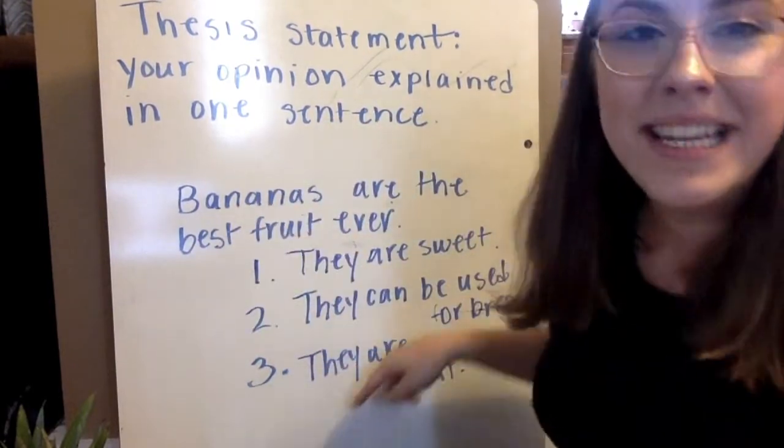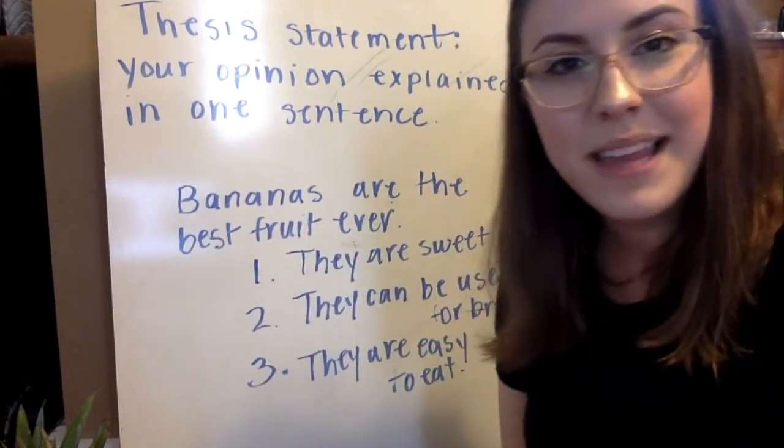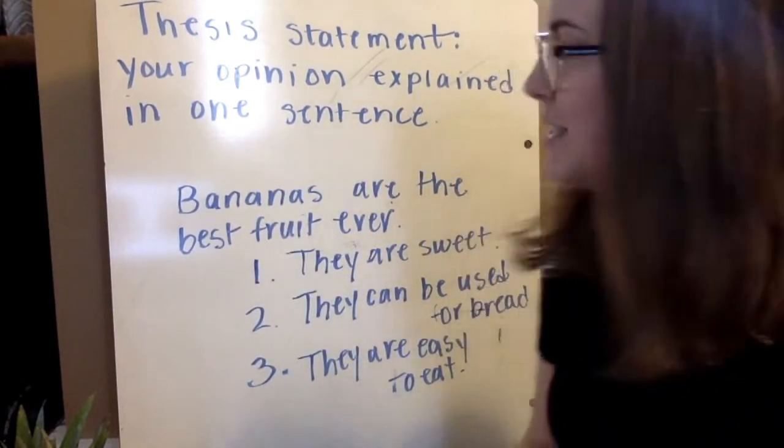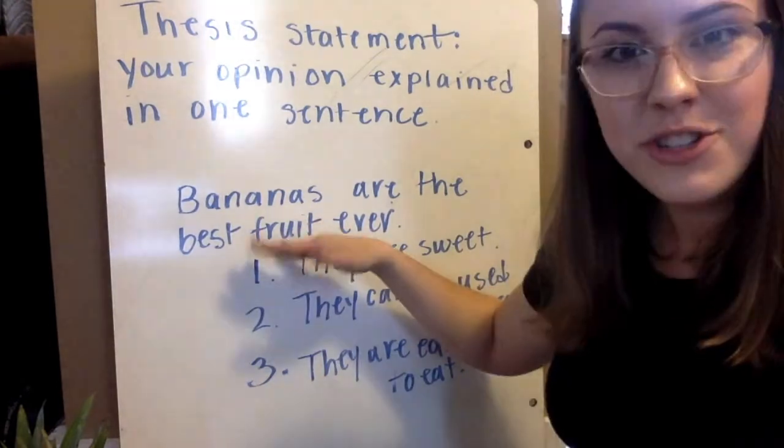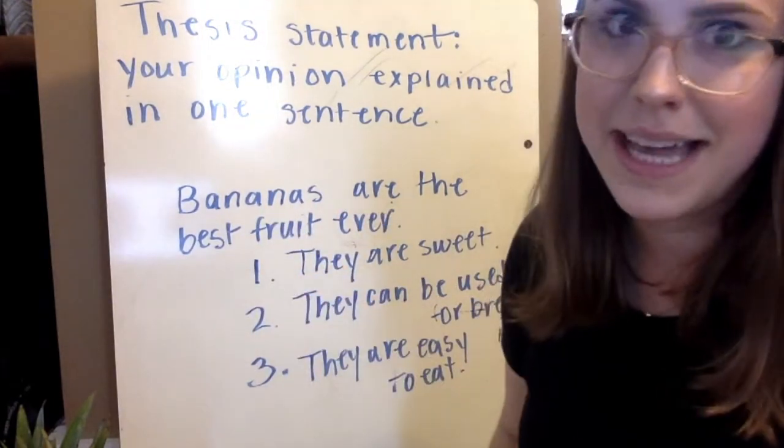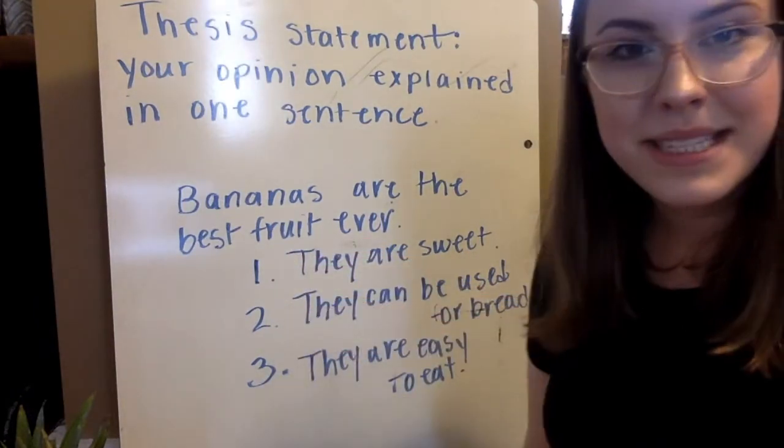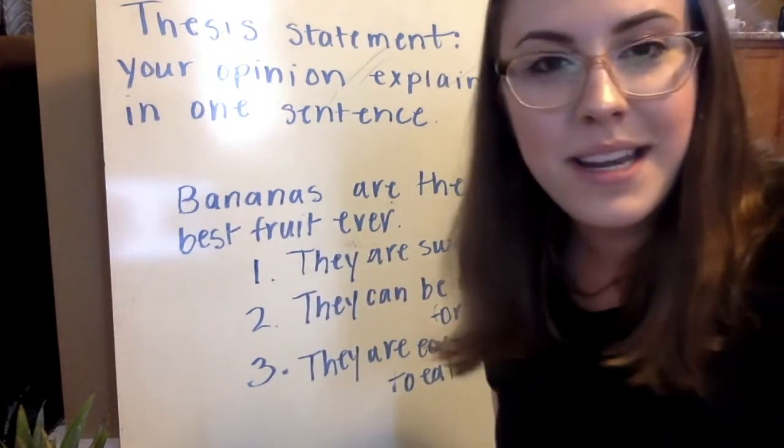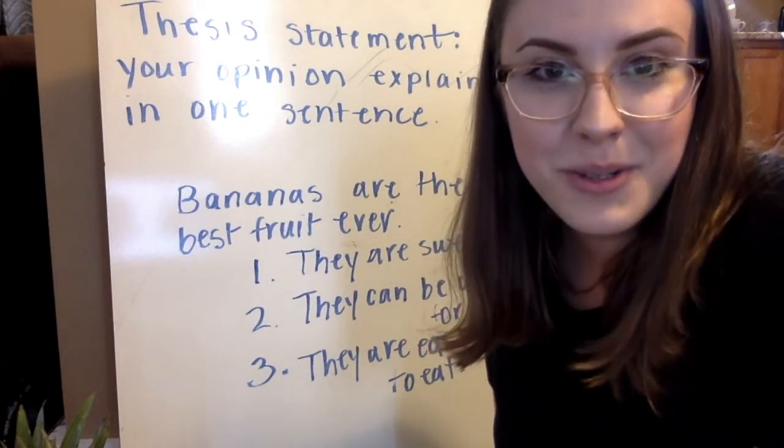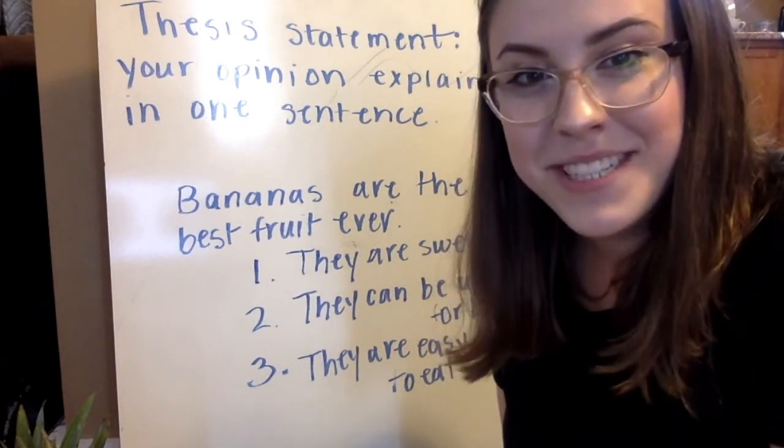So now that you have an idea of what to do for an outline, I want you to make one. So think about a thesis statement. Try not to do bananas because I already did that. Try something a little bit different. Try something that you really believe in. And then come up with three reasons. Put that on Google Docs or write it on a paper. Send a picture or share the Google Doc with your teacher. And you're all set for today.